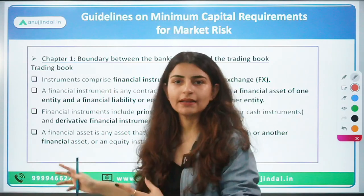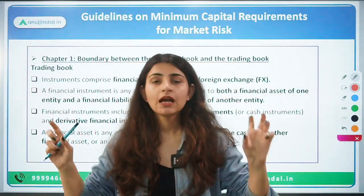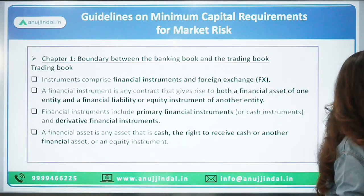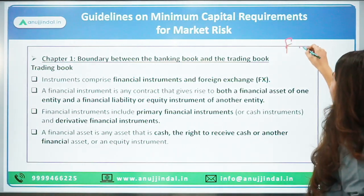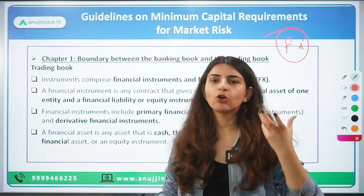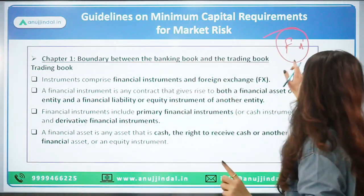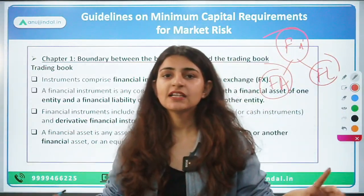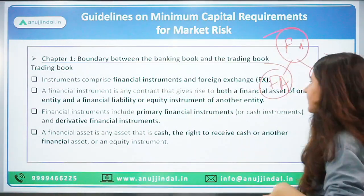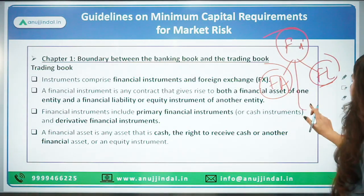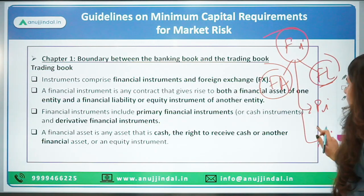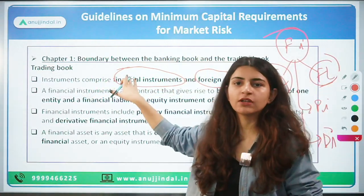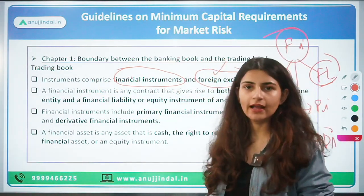We need to learn two things: the trading book and the banking book. These are two books maintained by banks. Financial instruments will either go to the trading book or the banking book. Financial instruments are nothing but a monetary contract between two entities — for one entity it creates a financial asset, and for another entity it creates a financial liability. As per these guidelines, instruments include both financial instruments and foreign exchange.